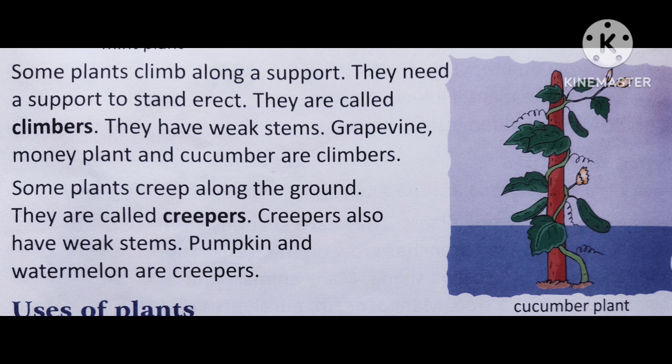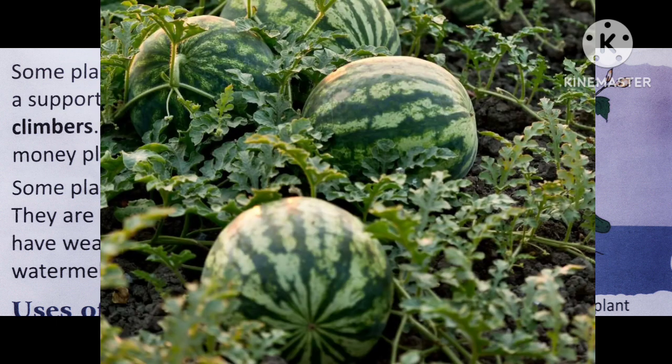Another type of plant is creepers. Some plants creep along the ground and are called creepers. Creepers also have weak stems. Pumpkin and watermelon are creepers. These plants creep close to the ground because the fruits growing on them are very big and heavy, so they can only remain on the ground. They cannot grow at high places where they would hang. That is why creepers creep along the ground. Just look at how big and heavy a watermelon is — and as they have weak stems, they grow on the ground.